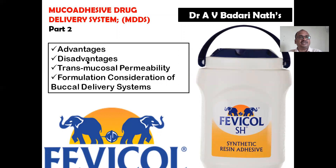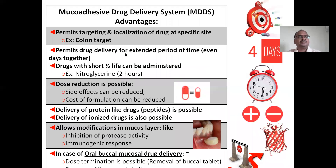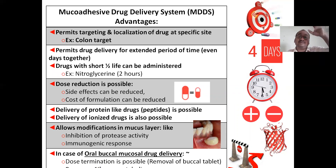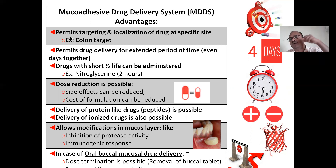Now we will see the advantages, disadvantages, and transmucosal permeability — these are the topics covered in Part 2. The first advantage: it permits targeting. Wherever you want to target to give the medication, you can localize the drug at a specific site.